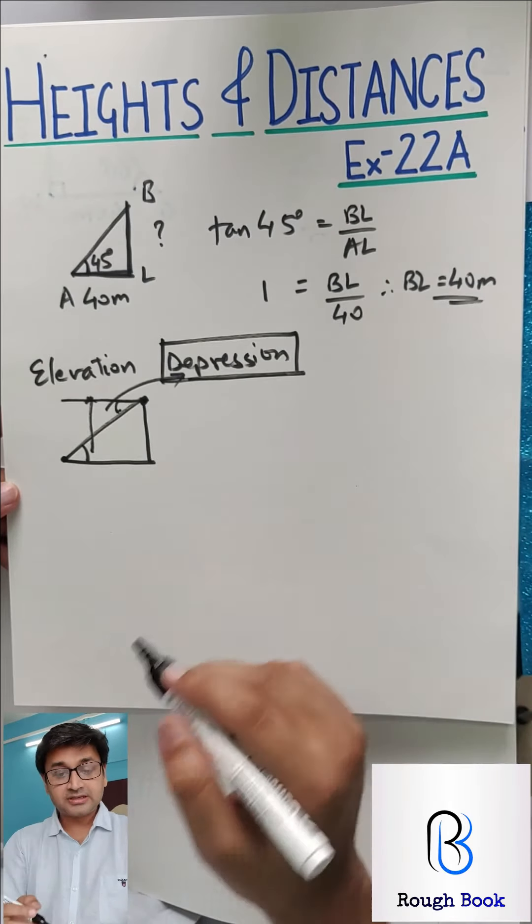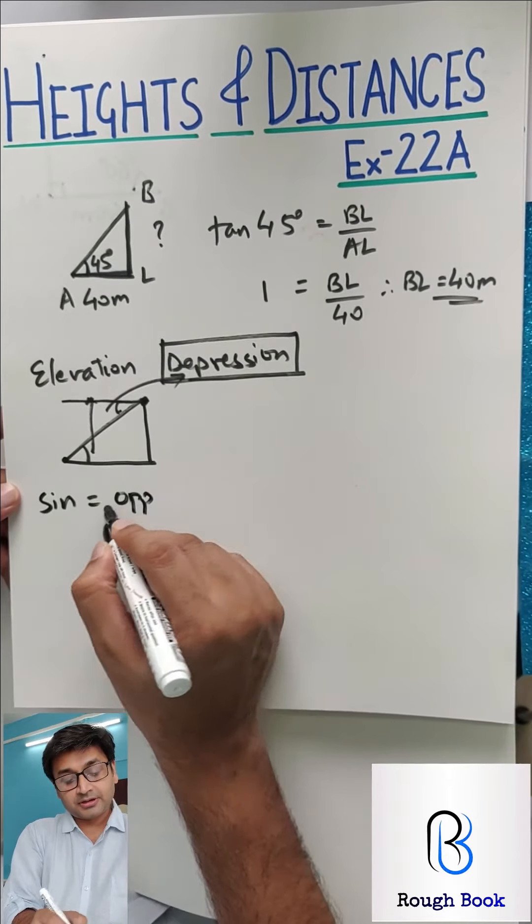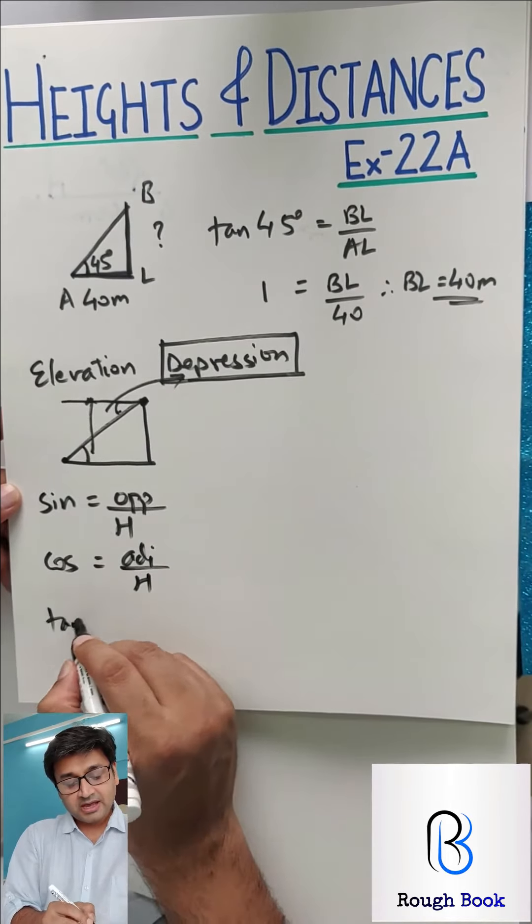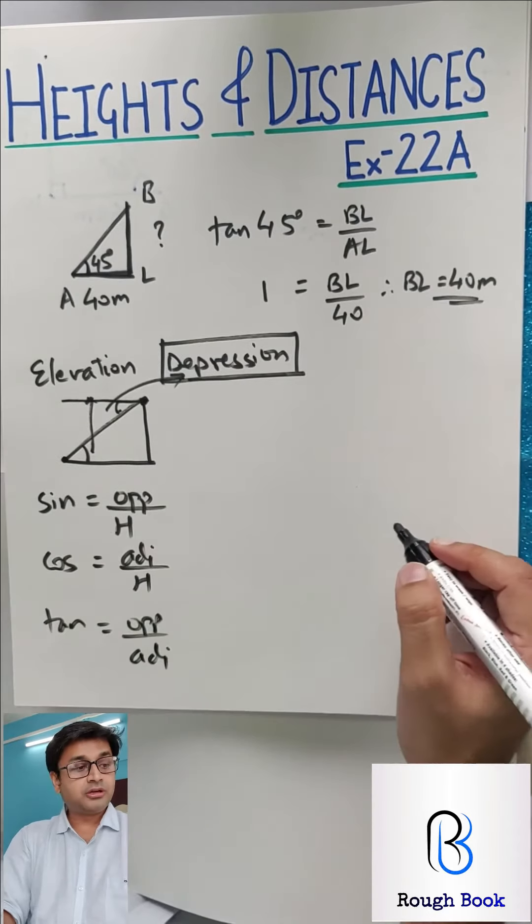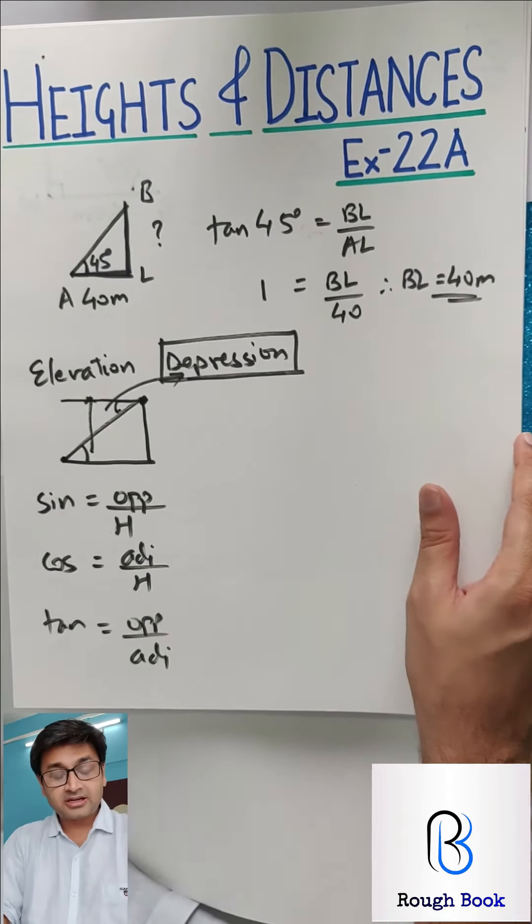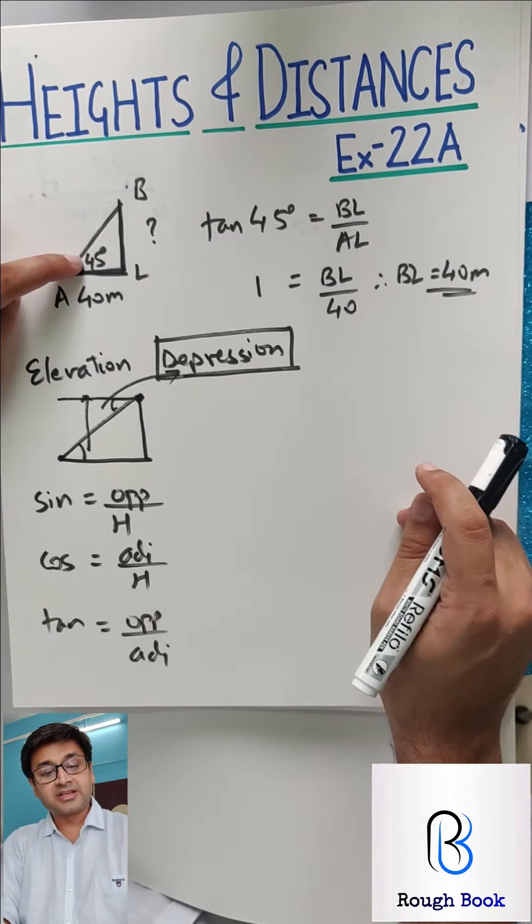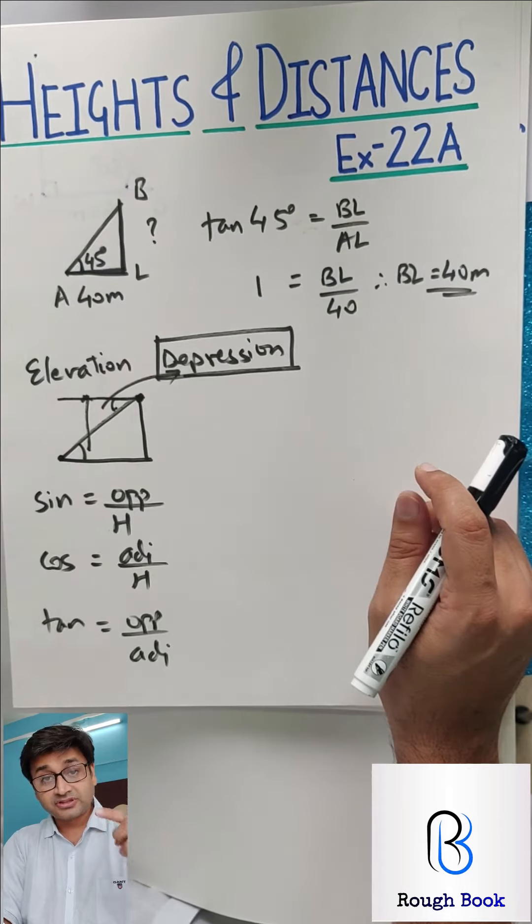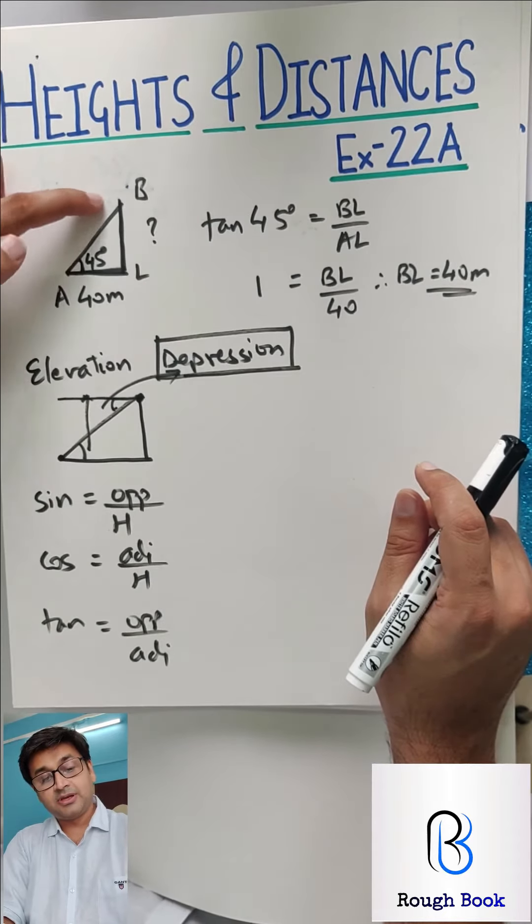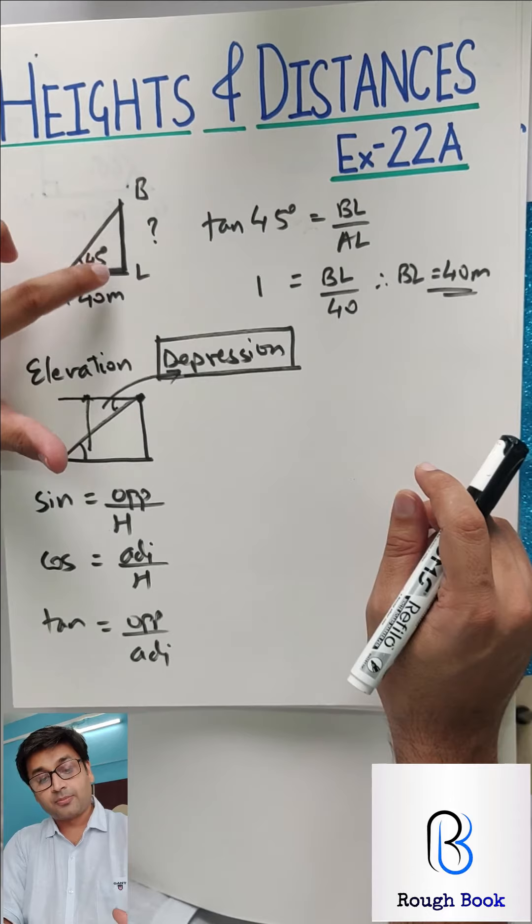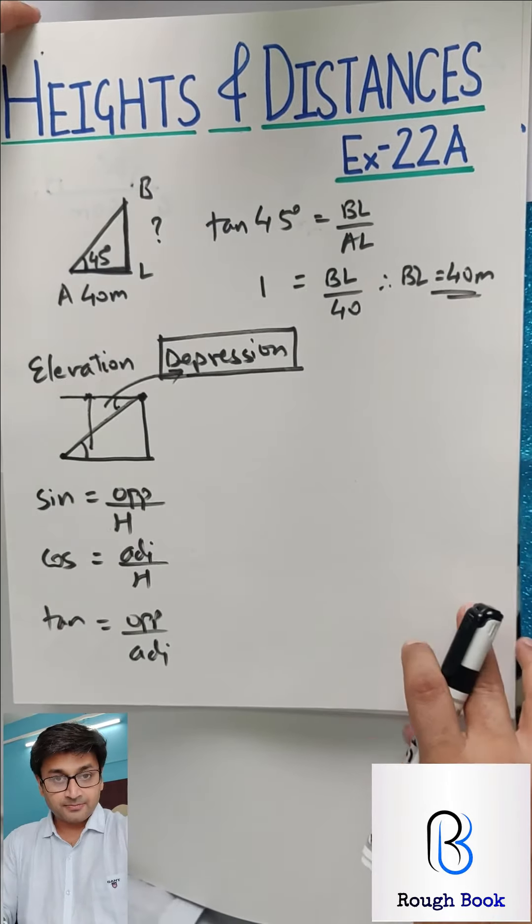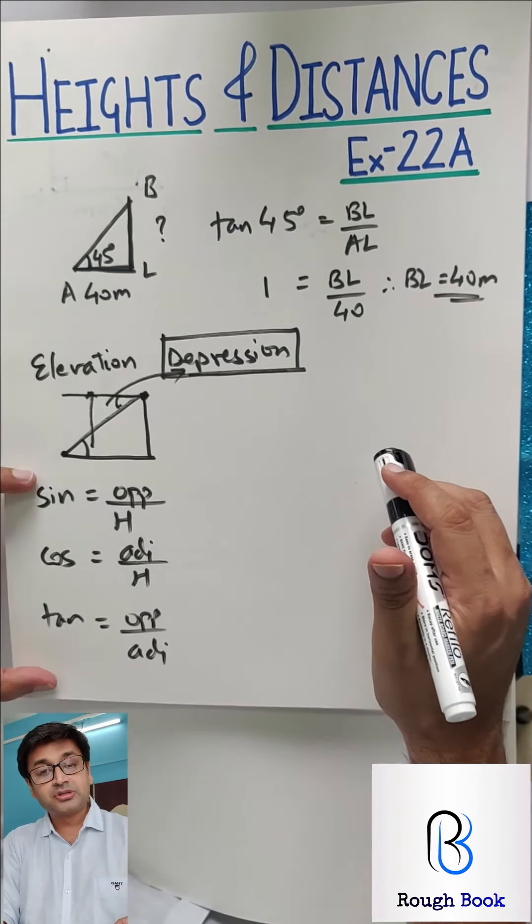The next thing you need to know is the ratios. Sin opposite upon hypotenuse. Cos adjacent upon hypotenuse. And tan opposite upon adjacent. You don't need to find the other three. Only these three are more than enough for you to get the entire topic. If you know this angle and you want to find any of these sides, you have to select which ratio. If I want to find BL, I will use tan, opposite upon adjacent. If I want to find AB, then I will use sin, opposite upon hypotenuse, or maybe cos, adjacent upon hypotenuse.